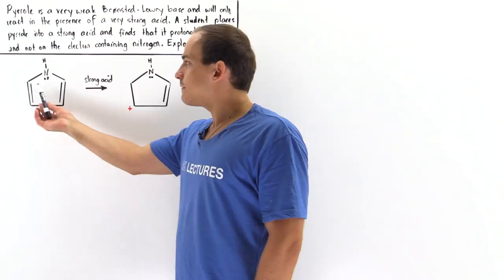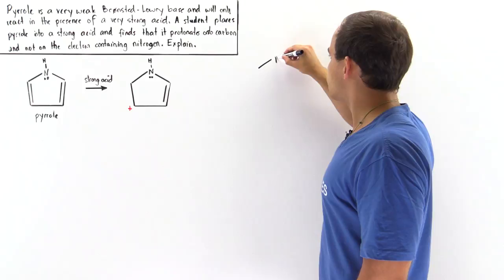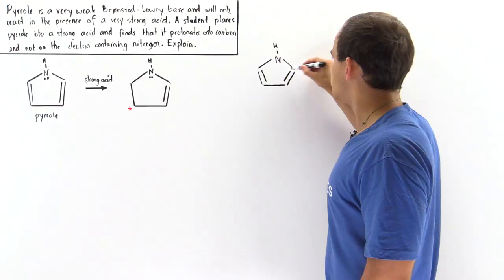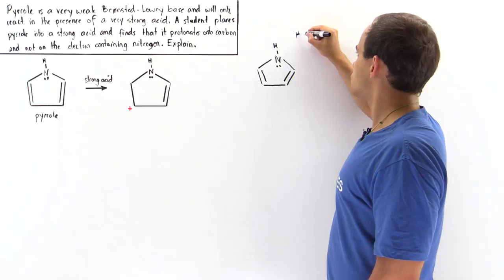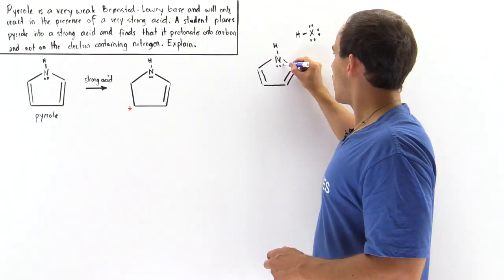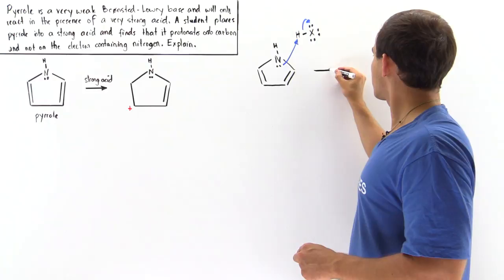Let's begin by hypothetically imagining that instead of the carbon being protonated by the acid, the nitrogen uses its lone pair of electrons to grab the H from the acid. So we have our pyrrole molecule with its two pi bonds and the lone pair of electrons on nitrogen. Let's suppose this is our hypothetical strong acid, and the lone pair of electrons attacks and grabs the hydrogen atom, displacing the sigma bond.